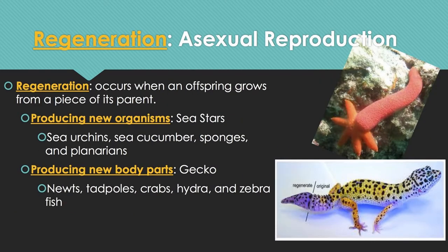Another form is regeneration, which occurs when an offspring grows from a piece of its parent. Regeneration can either produce new organisms or produce new body parts. In sea stars, one arm can grow into a whole new organism. Sea urchins, sea cucumbers, sponges, and planarians can also do this. Or it can just produce new body parts, as in geckos, newts, tadpoles, crabs, and zebrafish.